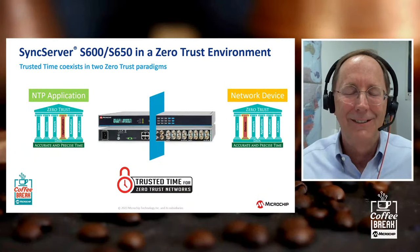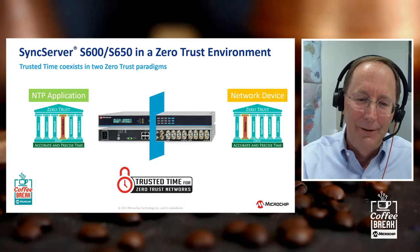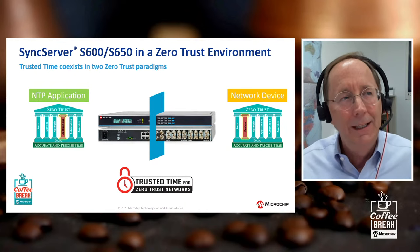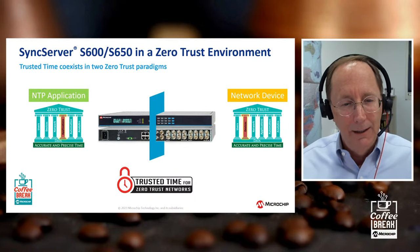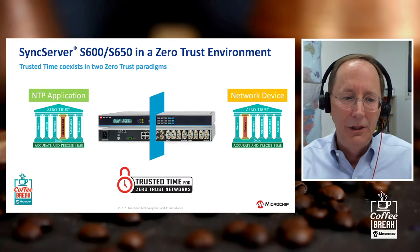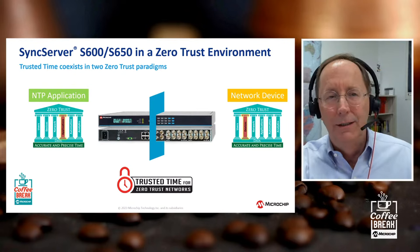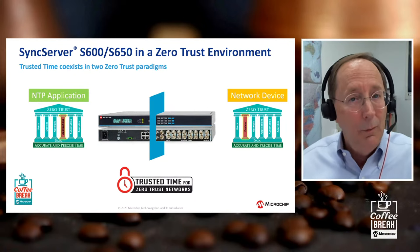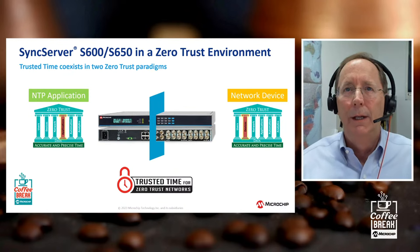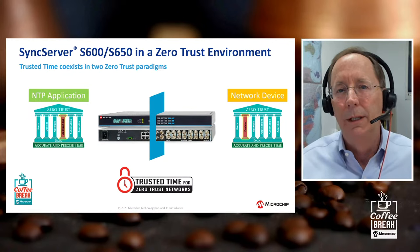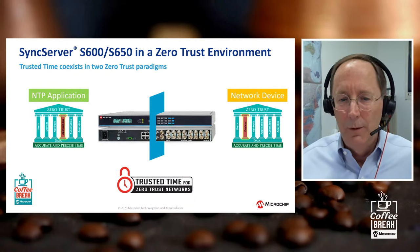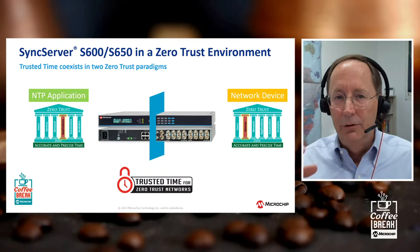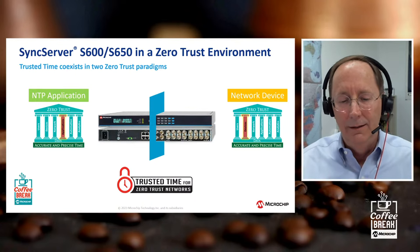What does Microchip provide to help IT people avoid those headaches? When we look at the sync server in a zero trust environment — you can see both the front and back of it — it's a clock accurate to about 15 nanoseconds (15 billionths of a second), and it provides very accurate time using the NTP application into that zero trust architecture. At the same time, it is a network device and therefore implicitly untrusted, so it has to fit into the devices category and become a trusted device connected to the network. This is the connection between trusted time and a zero trust network.